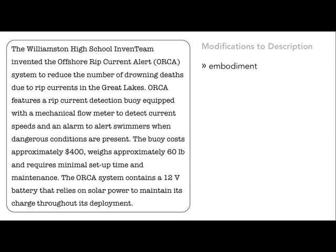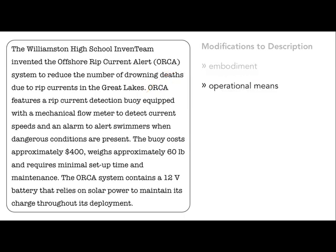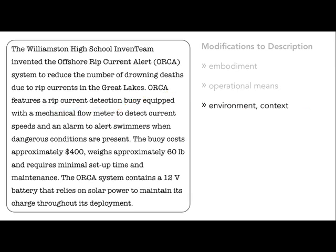First, embodiment — what is the actual physical form? The final embodiment was a rip current detection buoy. What if instead they decided to use a life jacket? Second, operational means — how does the invention work? The final prototype had a mechanical flow meter to detect rip currents. What if instead it measured weather conditions? Third, environment and context — for what setting is the invention intended? What if, instead of the Great Lakes, the team wanted to reduce the number of drowning deaths in recreational pools?